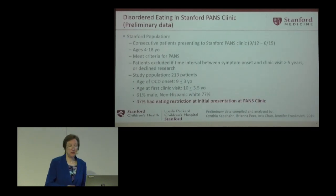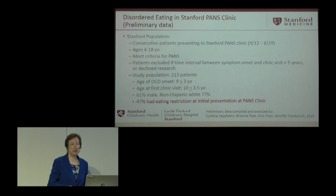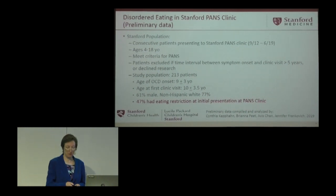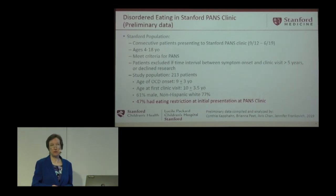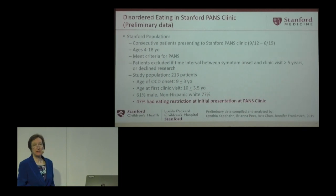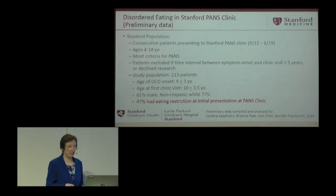We looked at consecutive patients presented to the PANS clinic. Ages ranged from 4 to 18. Patients were excluded if the time interval between symptom onset and clinic visit was more than 5 years, or if they declined research involvement. The study population was 213 patients. Age of onset for OCD was 9 years, age at first clinic visit was 10, 61% were male, and 77% were non-Hispanic white. We found that 47% had eating restriction at their initial presentation.